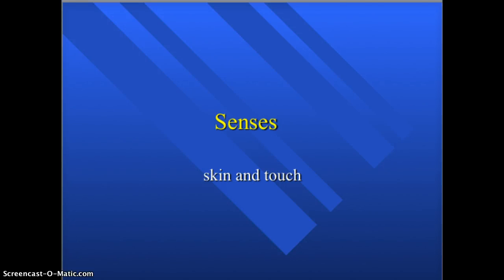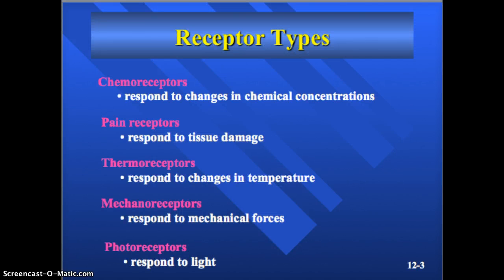The senses: skin and touch. We're going to go through each sense with a different PowerPoint, but just generally there are these types of receptors. There are chemoreceptors, which respond to changes in chemical concentrations, including your smell and your taste. There are also internal chemoreceptors to determine changes in blood concentrations of oxygen, hydrogen ions, glucose, etc.